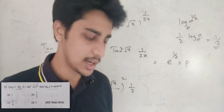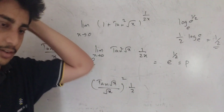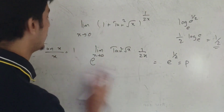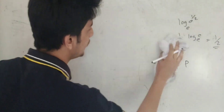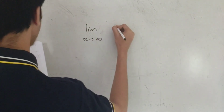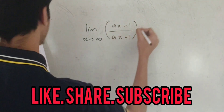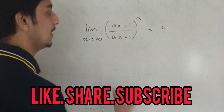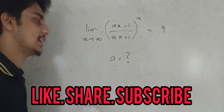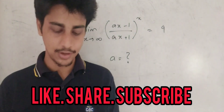So that's how the 1 power infinity format works — it was a complicated format. I'll tell you how to do the format you need. This format gives power x equal to 9. What is the value of a? Leave the answer in the comment box. I'll see you in the next video. Bye.